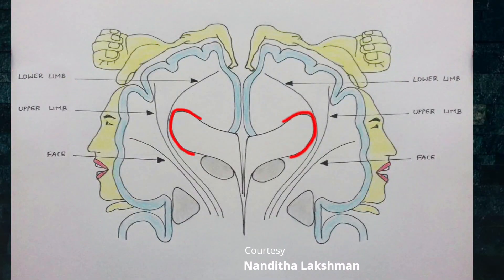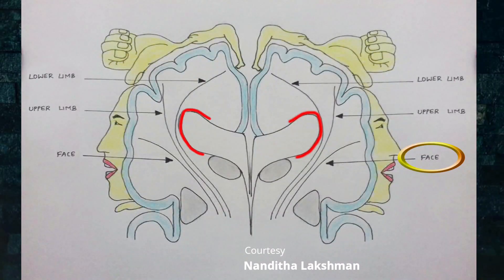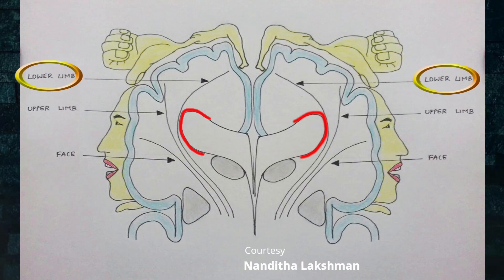Many a time this will show many cysts. Anatomically, the lower limb fibers go very close to the ventricle, as shown in this diagram, and the upper limb fibers are a little further away, and face fibers are still further away. So when there is hypotension and BP fall causing damage to the periventricular area, it generally happens on both sides, and both lower limbs get affected. That is the basic pathophysiology of this diplegic cerebral palsy.